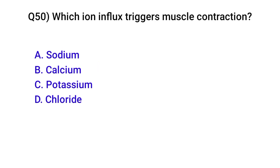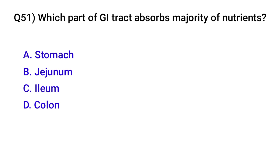Question number fifty: Which ion influx triggers muscle contraction? Correct option is B: Calcium. Question number fifty-one: Which part of the gastrointestinal tract absorbs the majority of nutrients? Correct option is A: Small intestine.